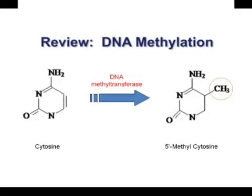DNA methylation in mammals is characterized by the addition of a methyl group to the C5 position of cytosine when present in a CpG dinucleotide. It is a reversible epigenetic mark that plays an important role in normal development, as well as several disease processes.